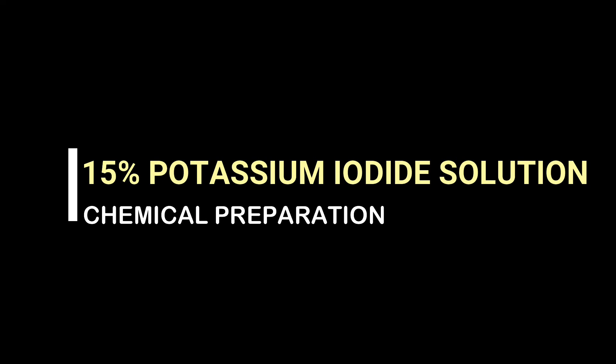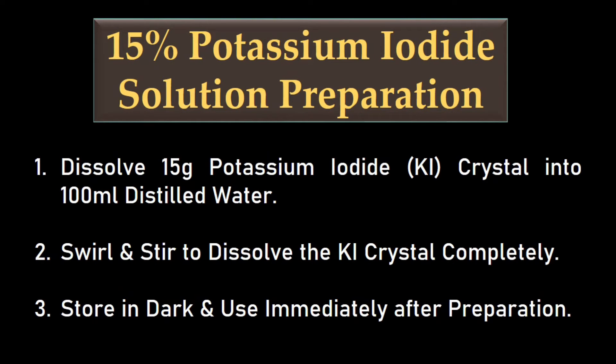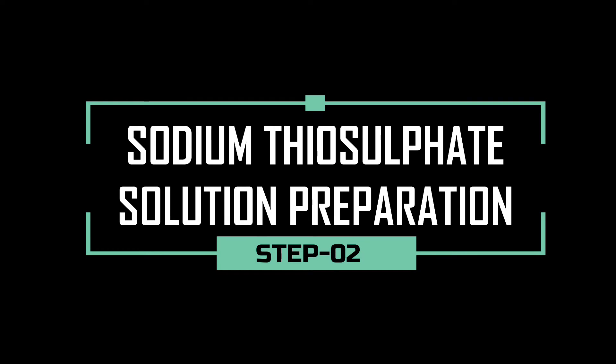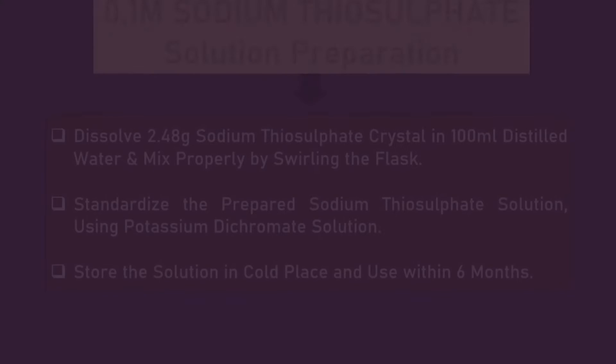We can prepare 15% potassium iodide by dissolving 15 grams potassium iodide crystal into 100 ml distilled water. Now we will prepare the expected 0.1 molar sodium thiosulfate solution.